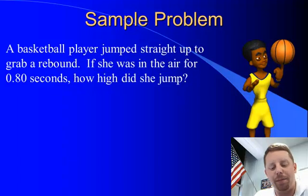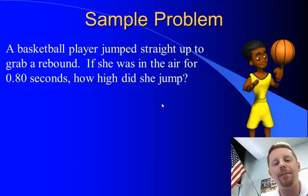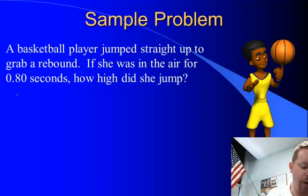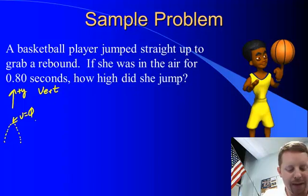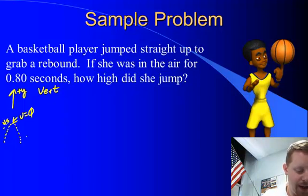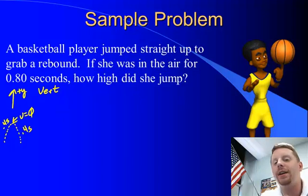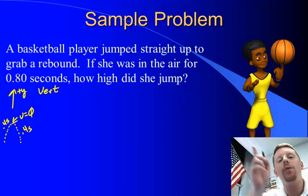How about a basketball player who jumps straight up for a rebound? If she's in the air for 0.8 seconds, how high did she jump? The basketball player starts on the ground and jumps up, so we'll call up our positive y direction as we make our vertical motion table. The basketball player travels up and then comes back down, and at the highest point velocity is zero. If it takes 0.8 seconds for the entire trip up and down, it must take 0.4 seconds to go up and 0.4 seconds to come down. It's often a lot simpler to solve just half of the problem, so let's analyze the motion of the basketball player on the way up only.